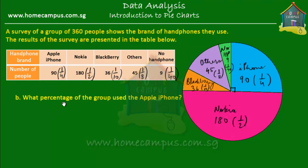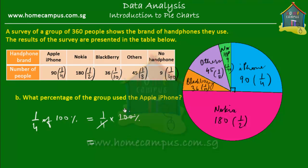Second question: what percentage of the group used the Apple iPhone? The Apple iPhone is a quarter of the whole pie. One-fourth of 100% means one-fourth times 100%, which gives you 25%. So 25% of the whole group used the Apple iPhone.